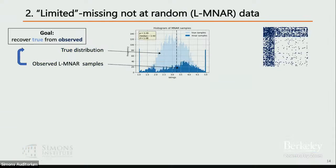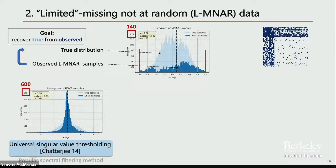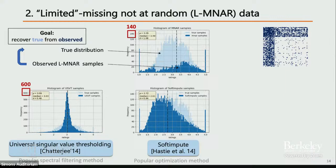With LMNAR data, there's a bias in the observed distribution — it no longer looks like MCAR. USVT works even worse, just predicting the mean with frequency around 600 for rating 3. Soft-Impute works reasonably but not as well as before — there's clearly a bias. SNN again works well.